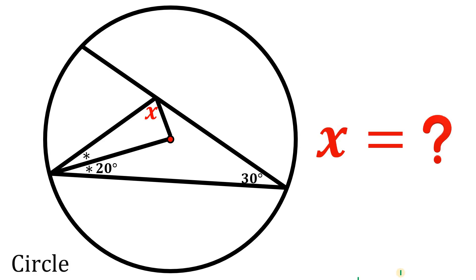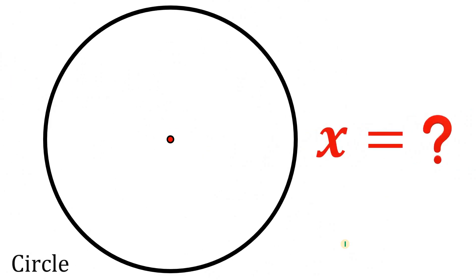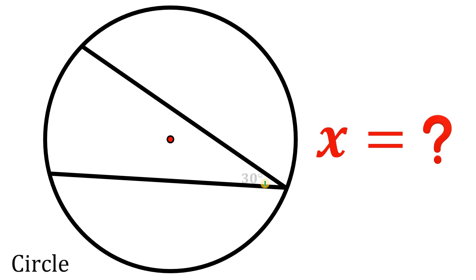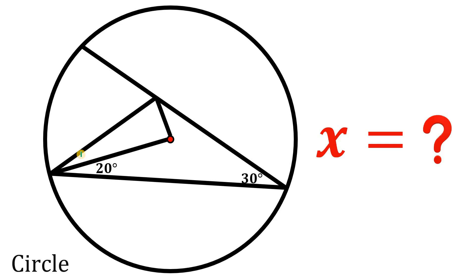Can you solve this geometry challenge? Here's the question. Given this circle, let's draw two chords having an angle of 30 degrees in between them. Now let's draw a radius and this angle simply equal to 20 degrees. Now let's draw some segments like this, and take note these two angles are the same thing, and this angle — let's call this x.